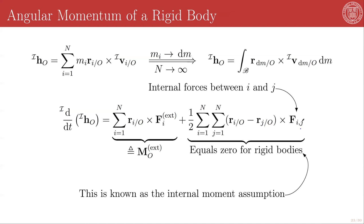However, you can define a set of forces where the internal moment term does not go to zero. The only new physics in Euler's laws versus Newton's laws is that Euler's second law posits that this term is exactly zero for rigid bodies — that internal forces produce no net moment when particles are rigidly attached. For non-rigidly attached collections, it is absolutely possible to have a force where this term does not vanish; this assumption is called the internal moment assumption and is fundamentally baked into Euler's second law, which states that the time derivative of the angular momentum of a rigid body about O equals the external torque about O.